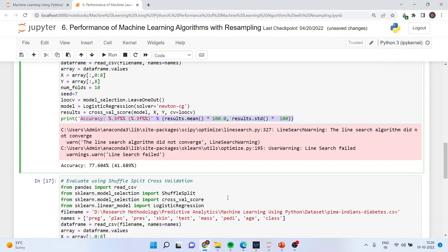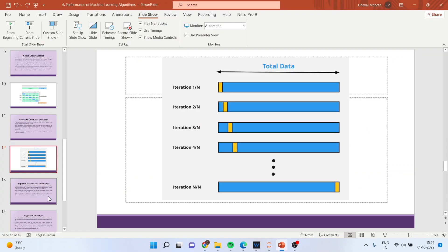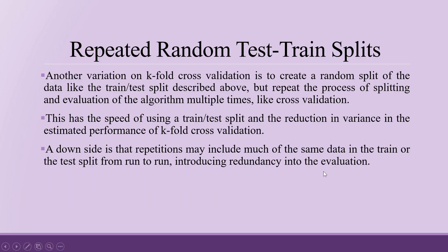Next comes the Shuffle Split cross validation. Another variation on K-fold cross validation is to create a random split of the data like a train-test split, but repeat the process of splitting and evaluation multiple times like cross validation. This has the speed of train-test split and reduction in variance from K-fold cross validation. A downside is that repetitions may include much of the same data in the train or test split, introducing redundancy into the evaluation.